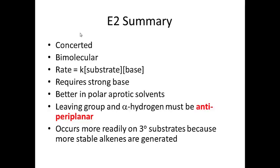To summarize the E2 mechanism: it is concerted and bimolecular — that's what the '2' stands for. The rate law is k[substrate][base]. E2 requires a strong base and works better in polar aprotic solvents — solvents that don't give up H+, because adding a base to a protic solvent would just protonate the base. The leaving group and alpha hydrogen must be anti-periplanar. E2 occurs more readily on tertiary substrates because you can get a more substituted alkene in the product, which we'll discuss more later in the video.